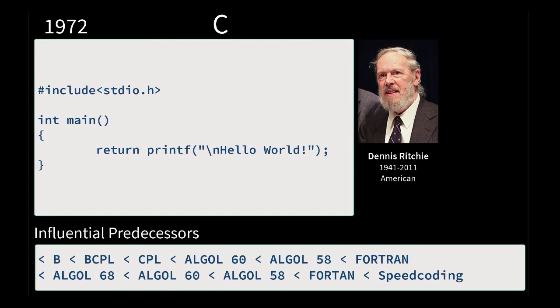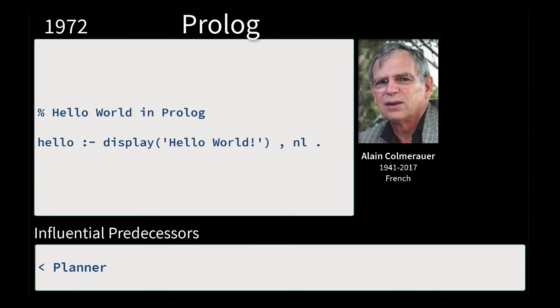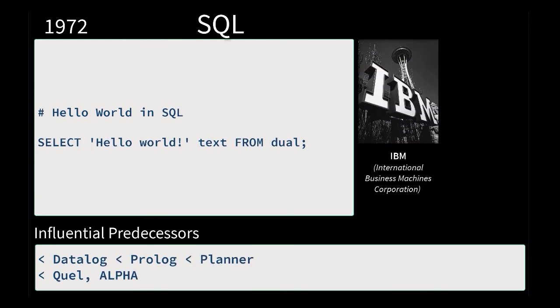There's the C language with Dennis Ritchie again — this was actually the first language to have Hello World in its documentation. INTERCAL is probably the first esoteric language, being a bit of a joke, actually having the word 'please' in the language itself and requiring it in the syntax.